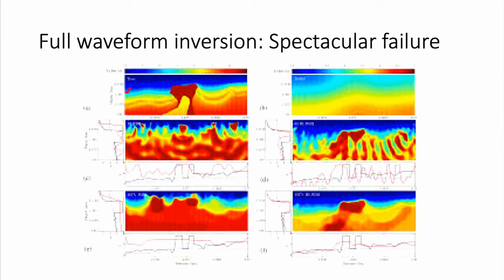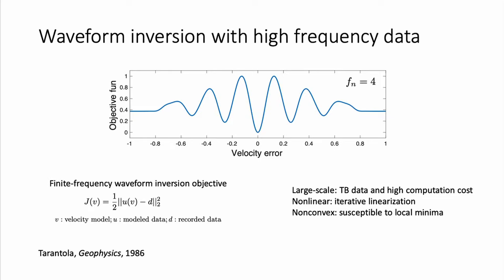However, we also see what I call spectacular failures. This figure is purposely blurred — the real model is what we are looking for. Starting from a very smooth background, you can end up with all kinds of models that are not successful in terms of resolving the geology or explaining the kinematics of the wave field. FWI is so powerful it can provide very high spatial resolution velocity models for direct geological interpretation, but there are many challenges.